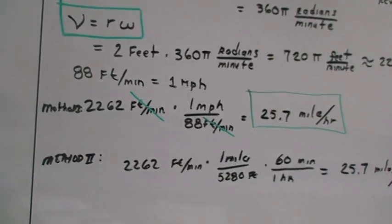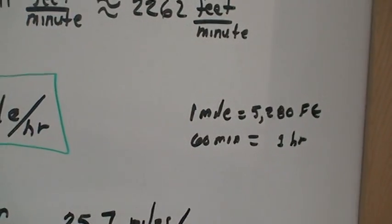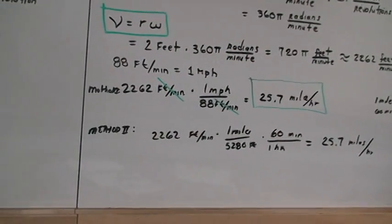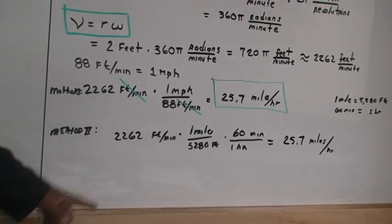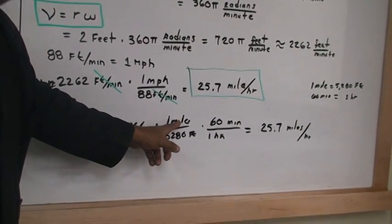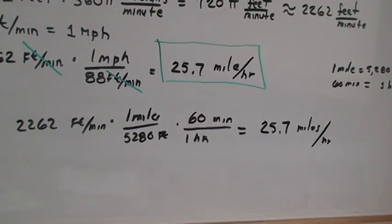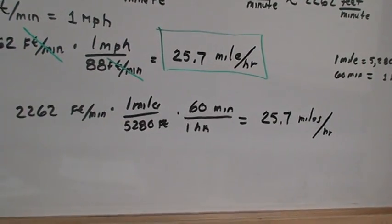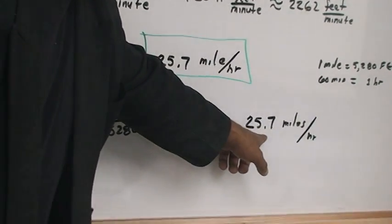Now method two, we use the conversion factor. One mile is equal to 5,280 feet. And also 60 minutes is equal to one hour. We also apply those conversions to the solution at hand. So 2,262 feet per minute times one mile, being in the numerator, divided by 5,280 feet, that's in the denominator, times 60 minutes over one hour, is equal to the same solution, which is 25.7 miles per hour.